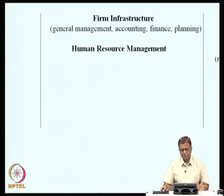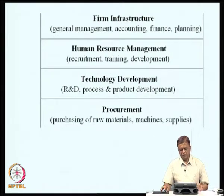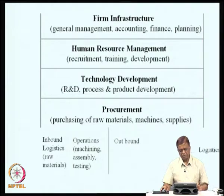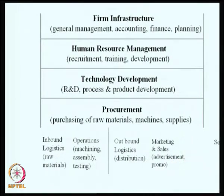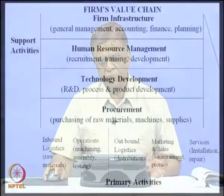This is how the firm's value chain looks. You have the primary activities and support activities, and depending on the value the firm is able to create, the firm makes a profit or a loss. A firm should know where it can maximize its value; decisions taken in those areas will help the firm realize higher profit margins.